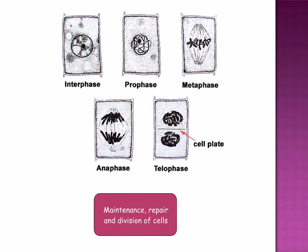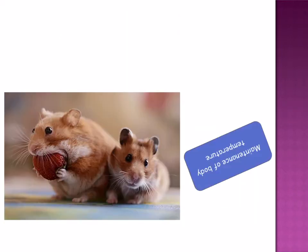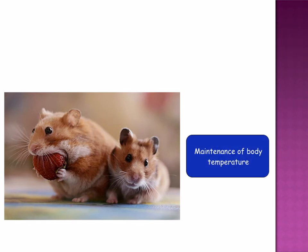Maintenance, repair, and division of cells also require ATP. Maintenance of body temperature in mammals and birds — as you know, mammals and birds are endothermic, so they need energy to replace that which is lost to the environment as heat.